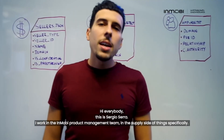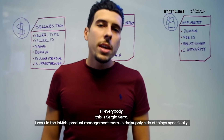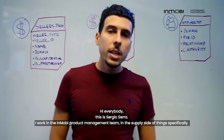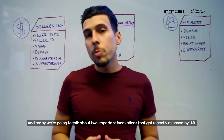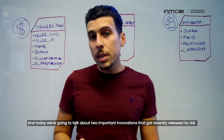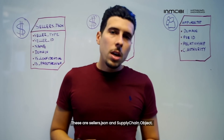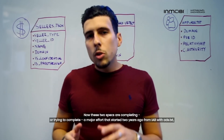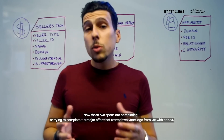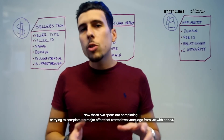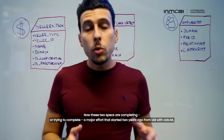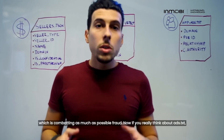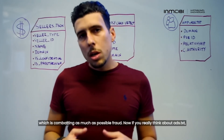Hi everybody, it is Sergio Serra. I work in the MobiCraft management team on the supply side specifically. Today we are going to talk about two important innovations recently released by IAB: sellers.json and supply chain object. These two specs are trying to complete a major effort that started two years ago with ads.txt, which is combating as much as possible fraud.